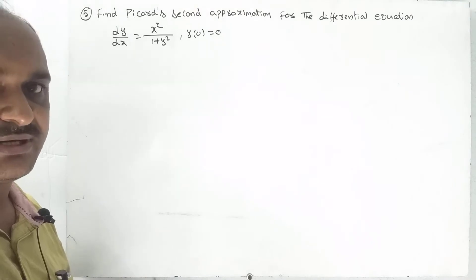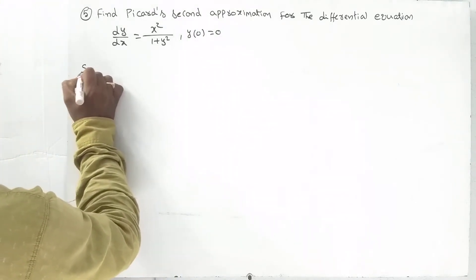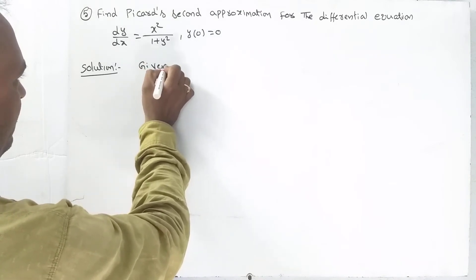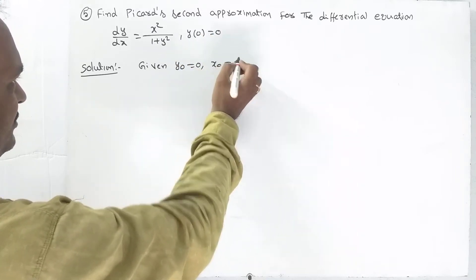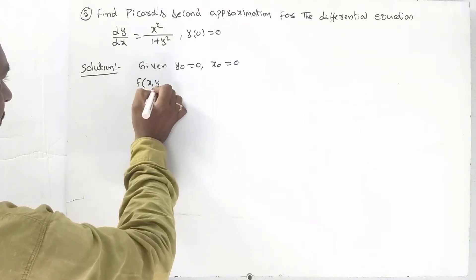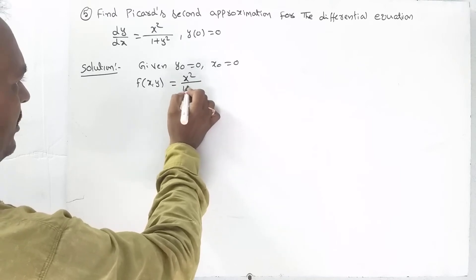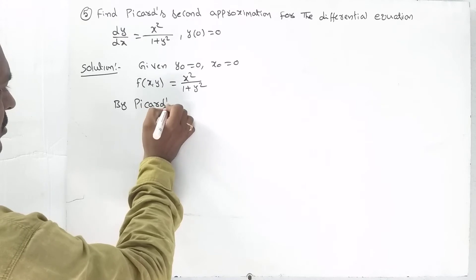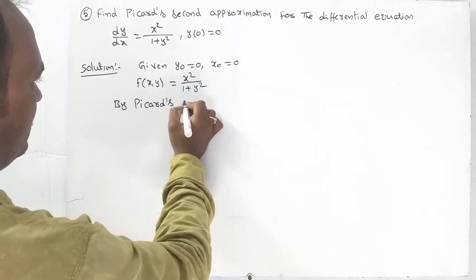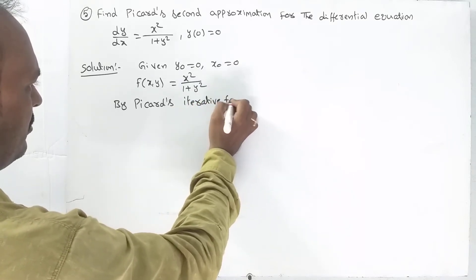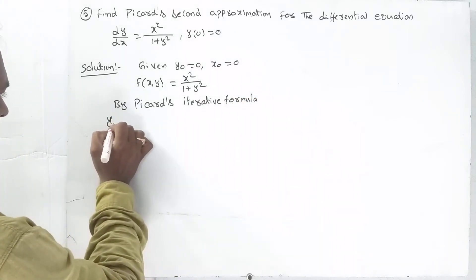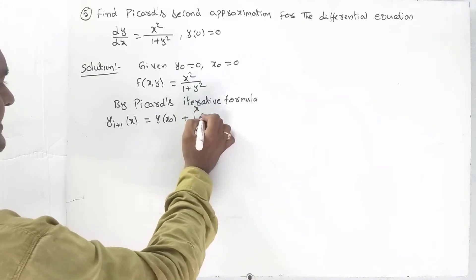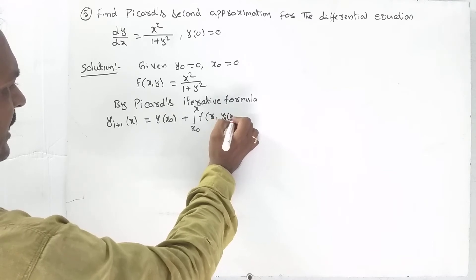The solution is given: y₀ equal to 0 and x₀ equal to 0. What is f of x comma y? f of x comma y is x squared by 1 plus y squared. Therefore, by Picard's successive approximation, the iterative formula is: y_{i+1} of x equal to y of x₀ plus integral from x₀ to x of f(x, yᵢ(x)) dx.